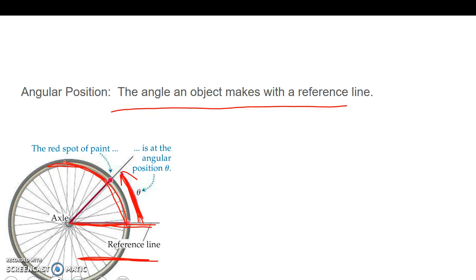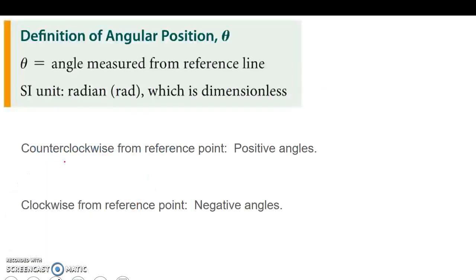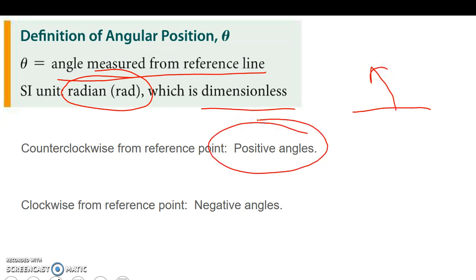We're talking a lot more about rotational motion here. Definition of angular position: the angle measured from the reference line. The unit we use is radians. Radians don't have a dimension, it's a unit and we go with it. Counterclockwise from the reference point, if I go this way, it's a positive angle. Clockwise, I consider it a negative angle. My radians would be positive or negative based off of that.